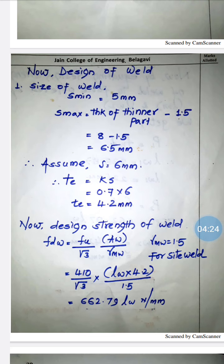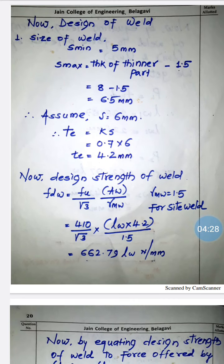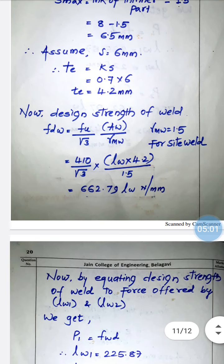Now we find the design strength of the weld. fwd = fu / (√3) × Aw / γmw. Since this is a site weld, γmw = 1.5. Substituting: fu = 410, Aw = lw × te = lw × 4.2, so fwd = 410 / (√3 × 1.5) × lw × 4.2, giving fwd = 662.79 lw N/mm, where lw is the unknown length of weld.